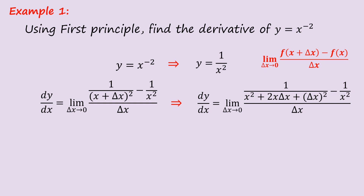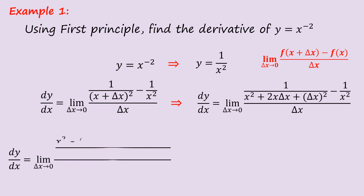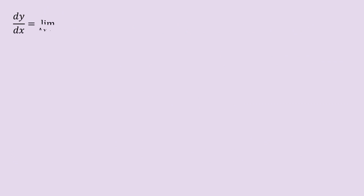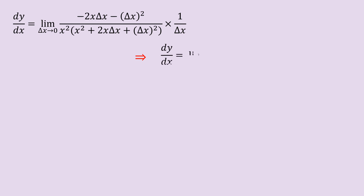Next, we expand 1/(x + Δx)², which gives 1 / (x² + 2x·Δx + (Δx)²). Then we subtract 1/x², all divided by Δx. We express this further, then apply the minus sign to multiply everything inside. The beauty of the first principle is that terms must cancel: x² cancels with −x². We observe that dy/dx has a common factor of Δx in the numerator, so we factor it out to cancel with the Δx in the denominator.